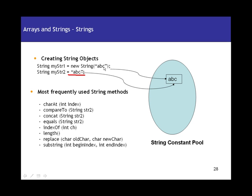If you say new String("ABC"), as discussed, whenever you use the new keyword, a new object is created on the heap. So a new string object will be created on the heap with the value ABC, and it is up to the garbage collector to destroy that string when it is no longer accessible. In the second example, you directly assign the literal value ABC without using new. In that case, the value is stored in a separate memory area called the string constant pool — a memory structure where all string literals are stored.